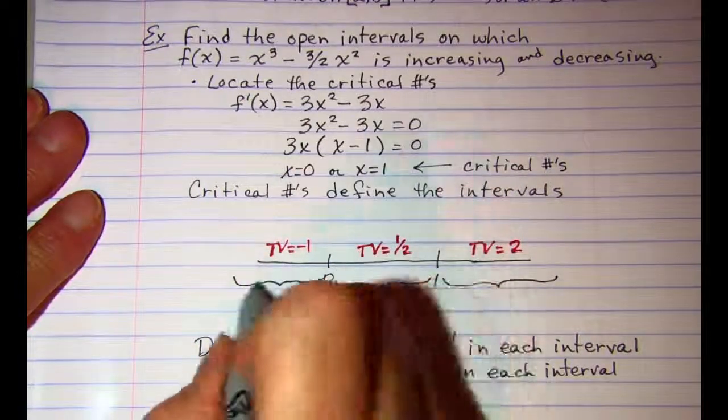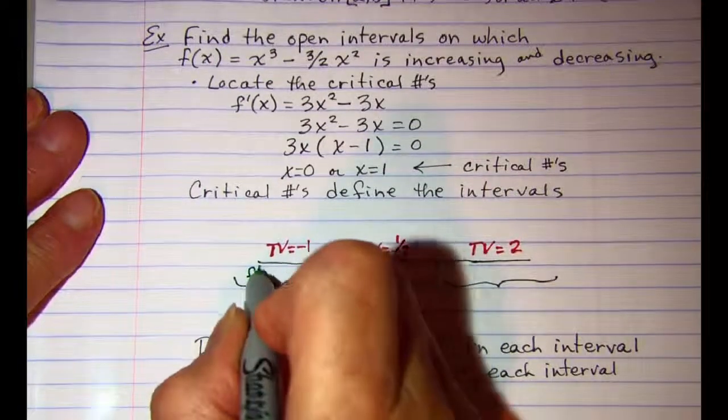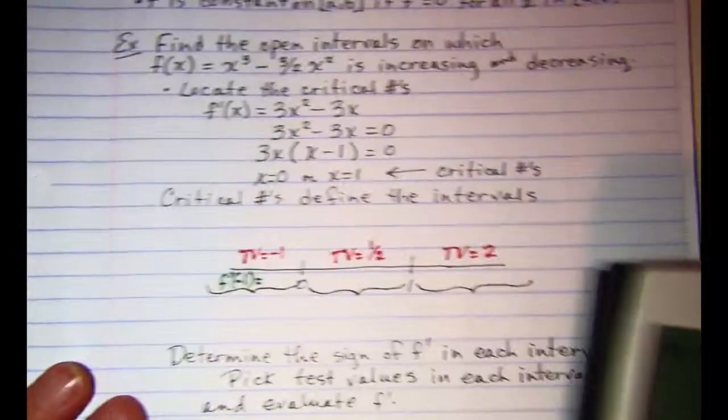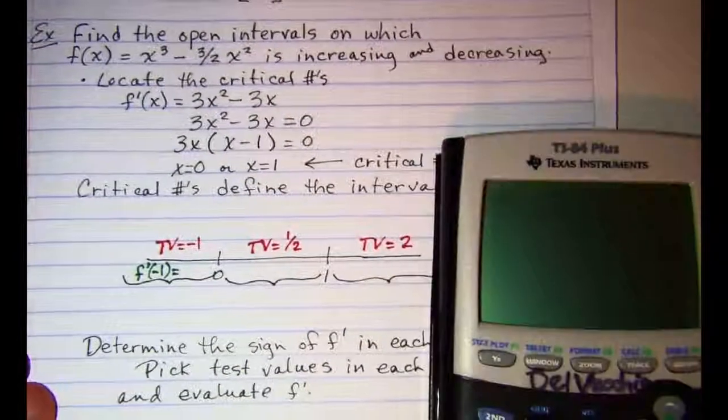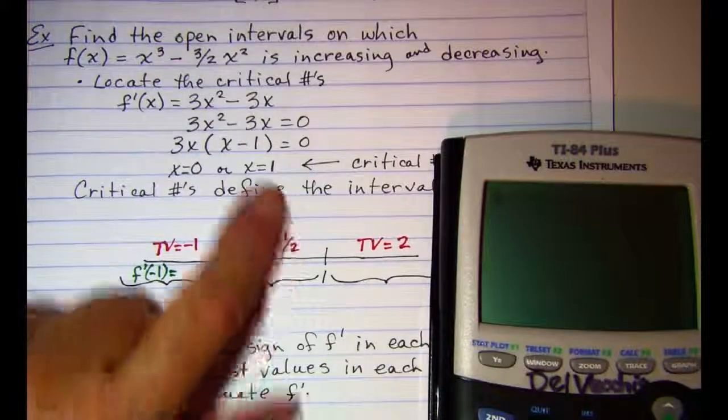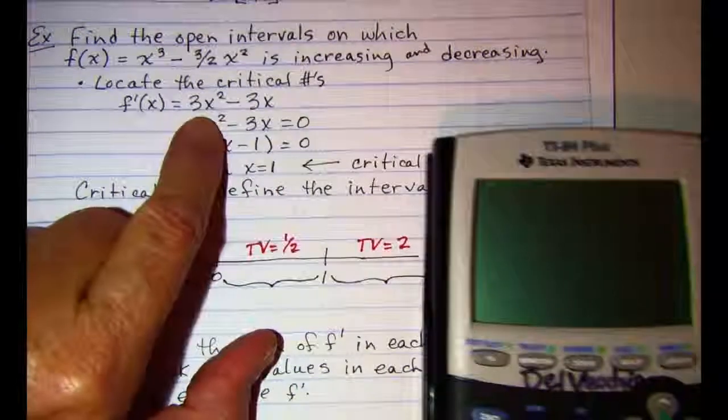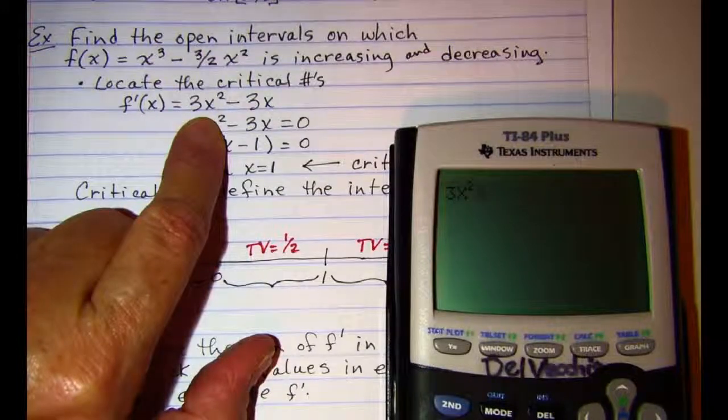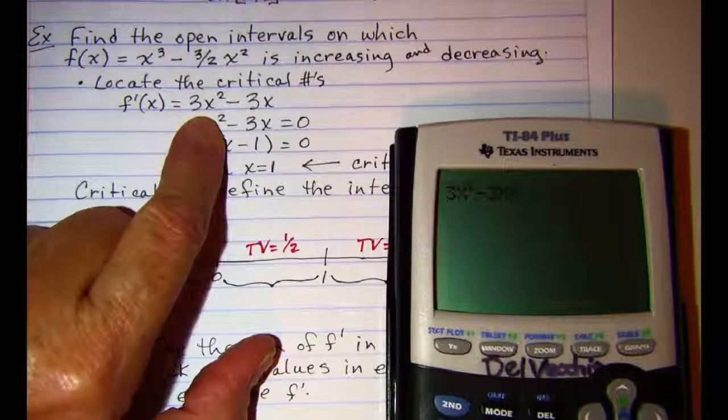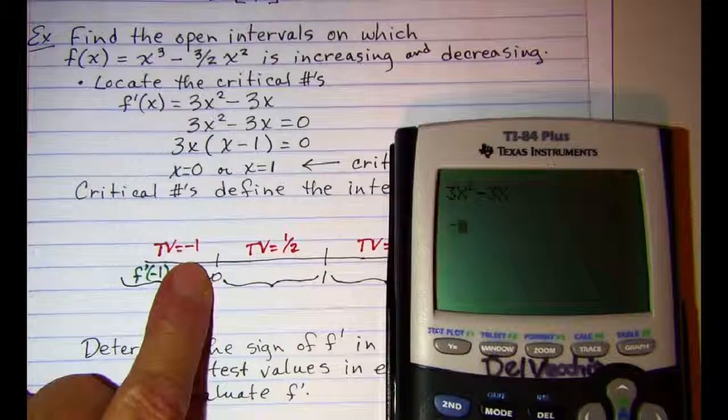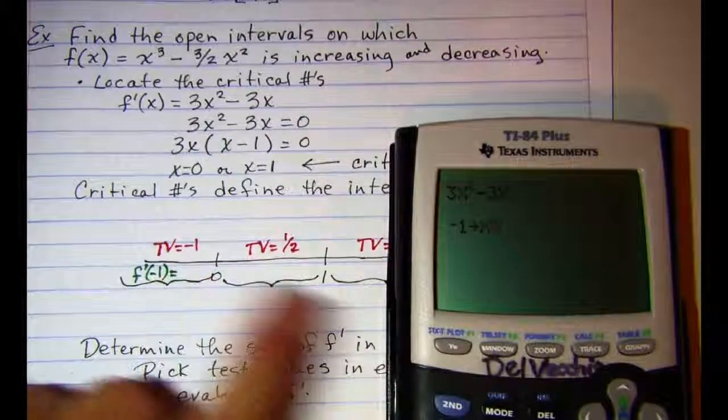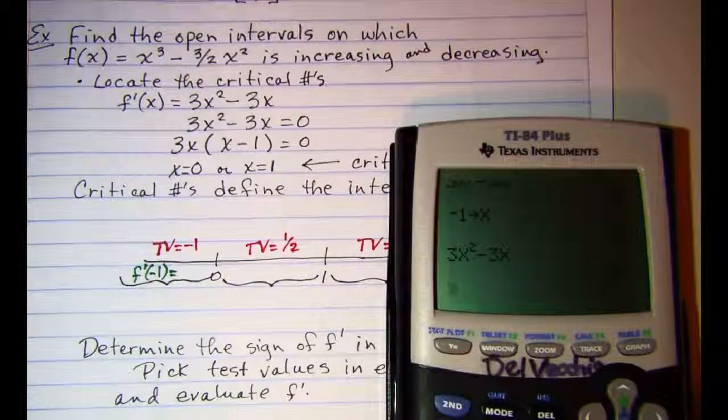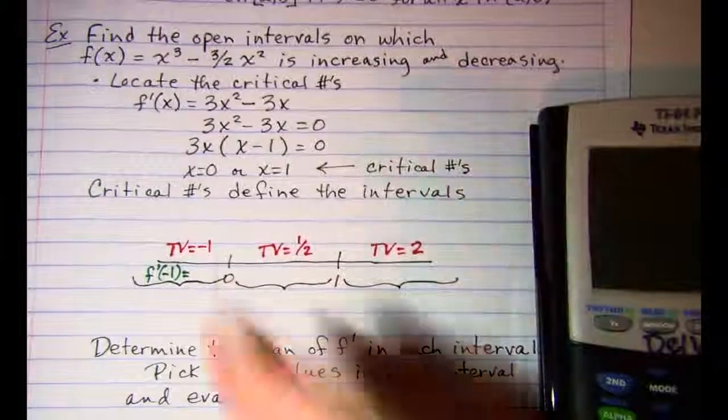So let's see, f'(-1), and we want our derivative 3x² - 3x, and I want to put -1 in for x, and it looks like I've got 6.